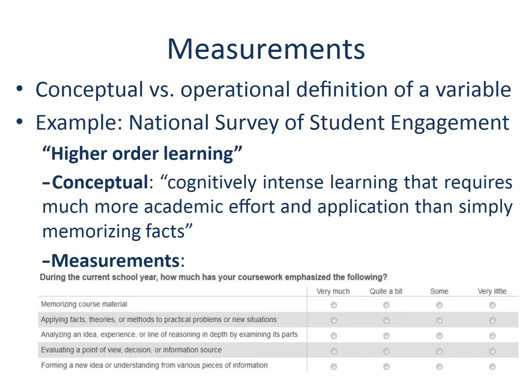Your data in a quantitative research setting captures the variability of something. The variable should contain the information we want to know in a numerical format. Operationalizing the conceptual definition of a variable is possible through measurements. Here is an example from the National Survey of Student Engagement, a well-known survey study for students' college experiences. One of the concepts the survey tries to collect data on is higher-order learning. Conceptually, the definition of this term is cognitively intense learning that requires much more academic effort and application than simply memorizing facts.